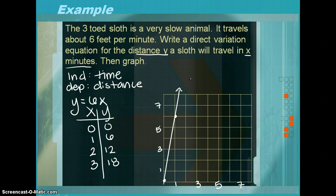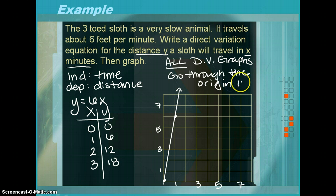Something you'll notice about all direct variation graphs is that they should always go through the origin. So again, all direct variation graphs go through the origin, which is 0, 0.